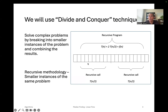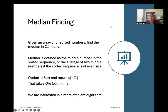An example is when an array is divided into two parts, two recursive calls are made, and then we combine the results. Depending on the algorithm, you could break it down into multiple parts of different sizes. Now let's look at the median finding problem: we're given an array of unsorted numbers and we want to find the median in linear time — that is, O(n) time.